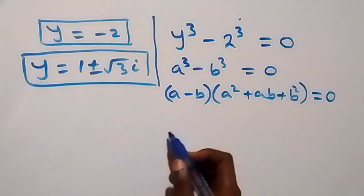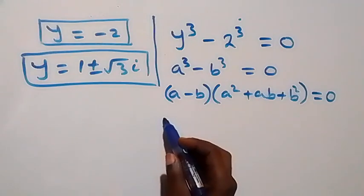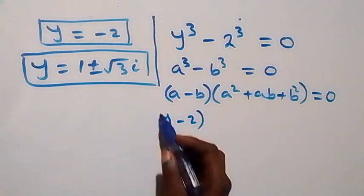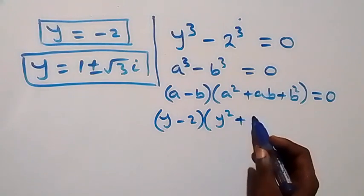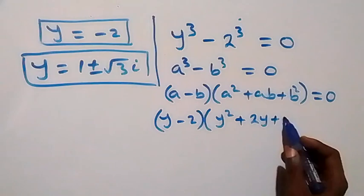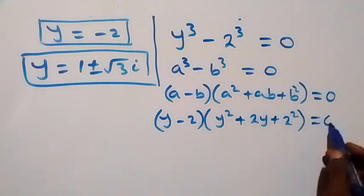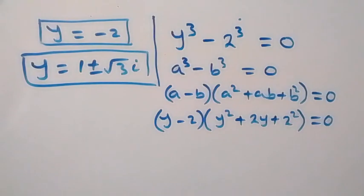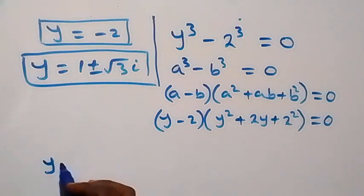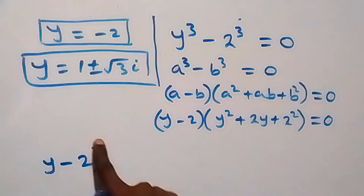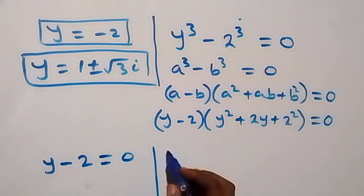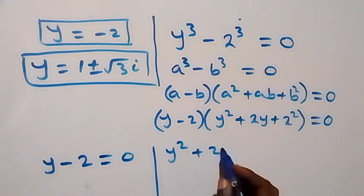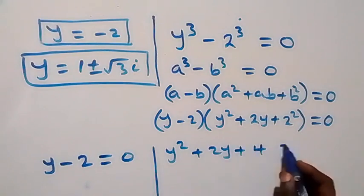From what we have, this becomes (y - 2)(y² + 2y + 2²) equals to zero, that is (y - 2)(y² + 2y + 4) equals to zero. Solving this we have two cases as well: y minus 2 equals to zero, or y² + 2y + 4 equals to zero.